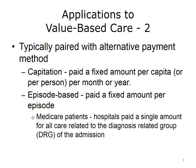A version of this is the idea of capitation — paying a fixed amount per capita or per person, per month or year. Another version is episode-based payments, where providers are paid a fixed amount per episode. For example, an episode may exist from the beginning stages of a knee replacement through recovery. For Medicare patients, hospitals are paid a fixed amount for all care related to the diagnosis-related group, or DRG, of the admission — similar to episode-based payment but limited to the hospital costs of the current stay.